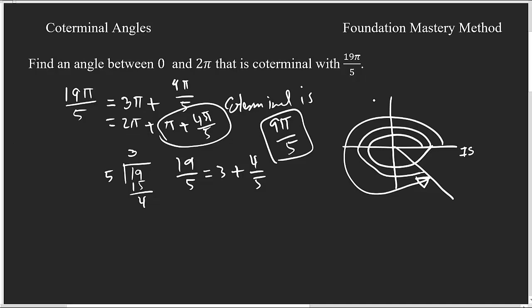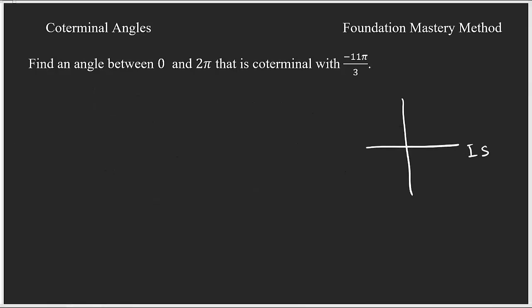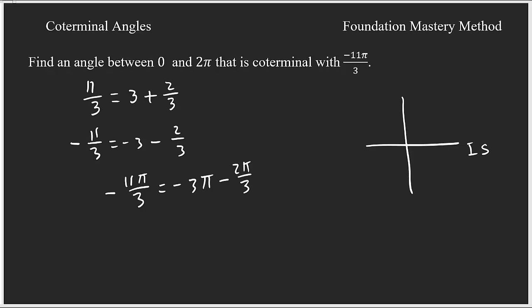Another example: find the coterminal angle between 0 and 2π for the angle negative 11π/3. Let us look at the division: 11 divided by 3 is 3 remainder 2, so 11/3 = 3 + 2/3. Since we have a negative, everything is negative — we introduce π, giving negative 3π − 2π/3.